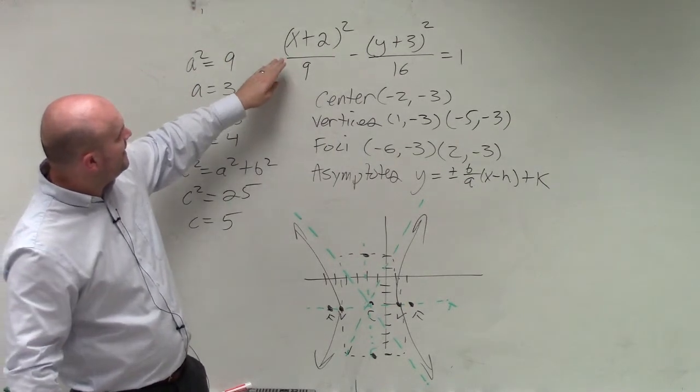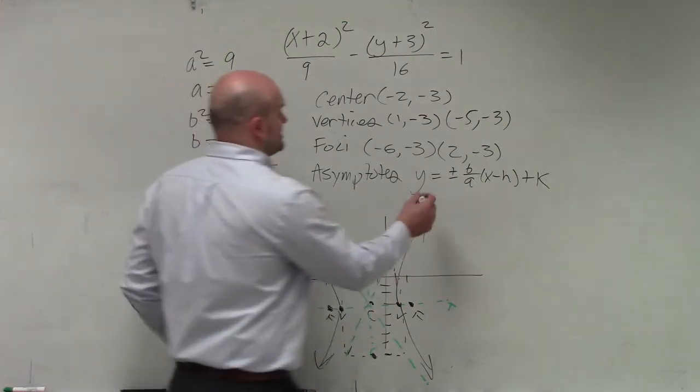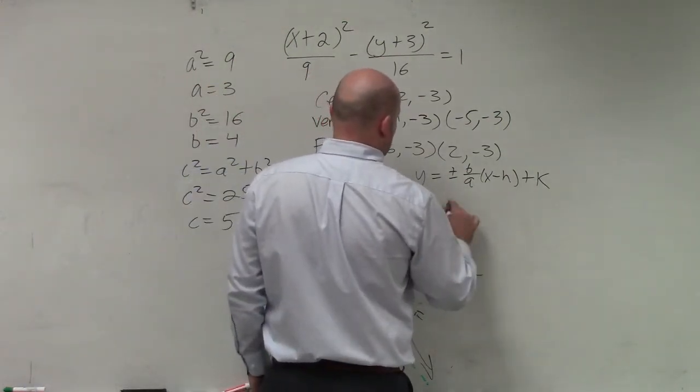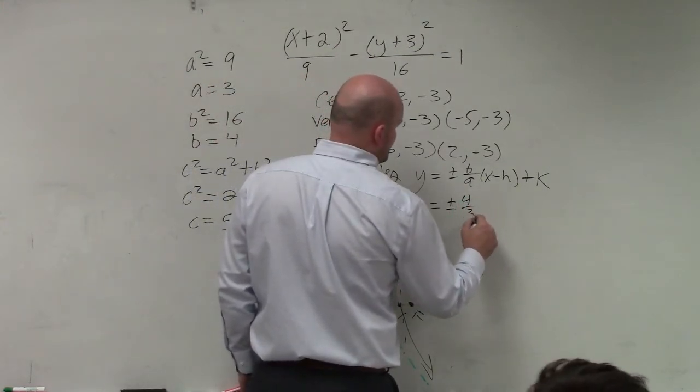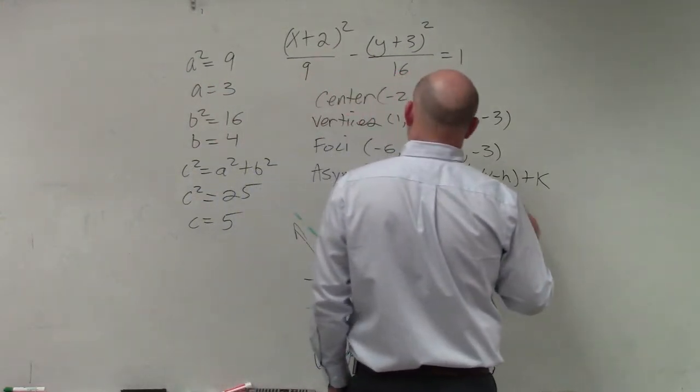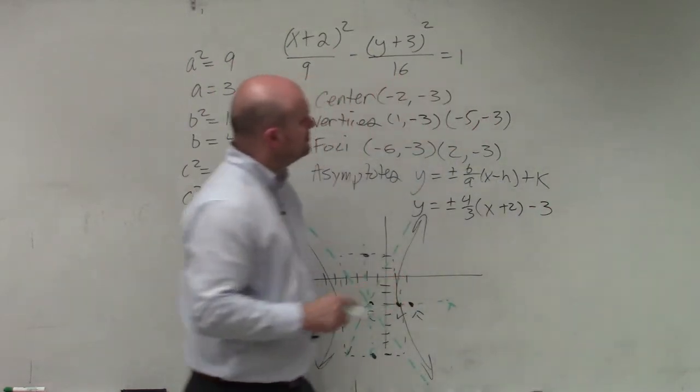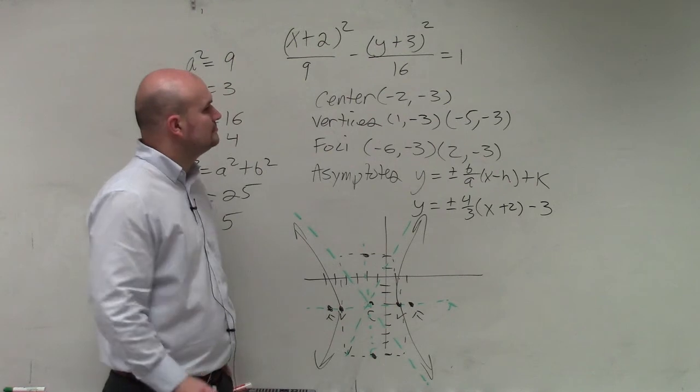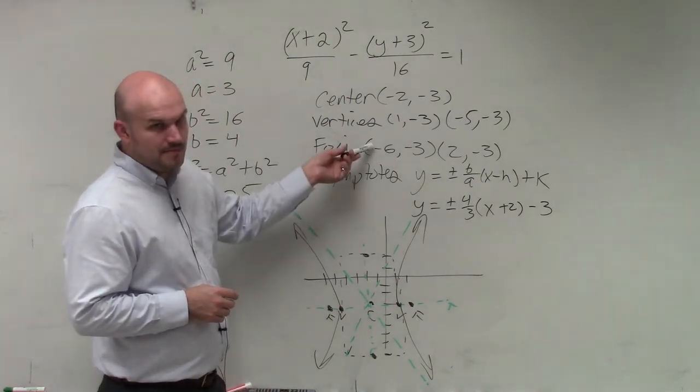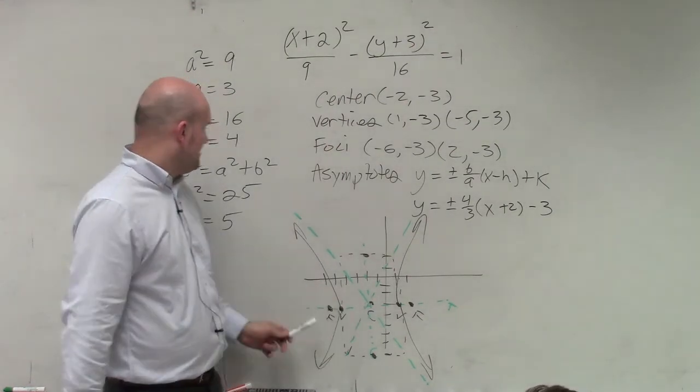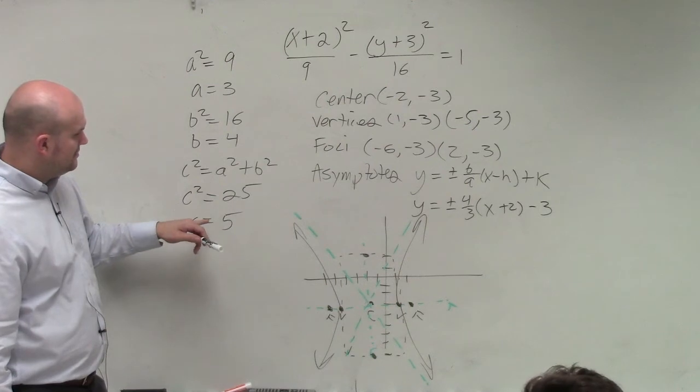So I know my x minus my h is going to be the same thing, and then that's going to be minus 3. So I have y equals plus or minus my b, which is 4 over a. So 4 thirds times (x+2) minus my k.